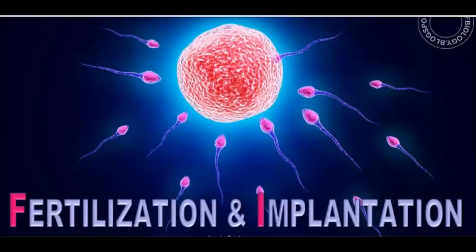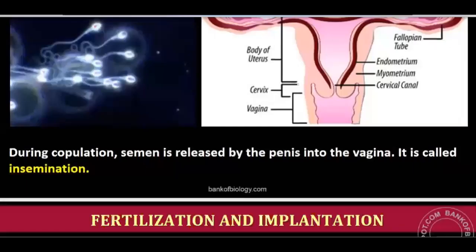We have completed the male reproductive system and the female reproductive system. Now we are going to start with fertilization and implantation. The zygote formation results from fertilization, and the fertilized zygote has to implant into the uterine wall — a process known as implantation.